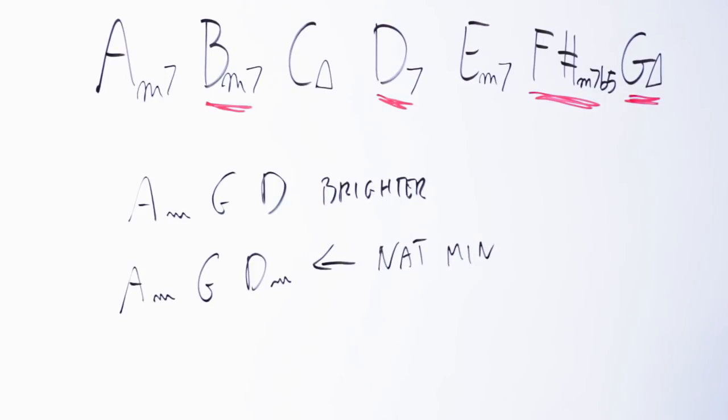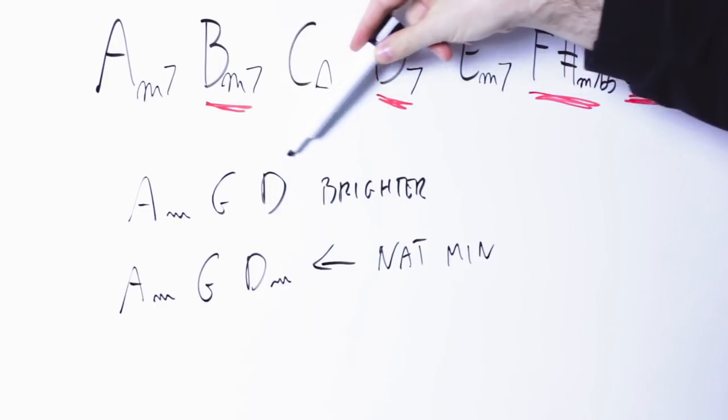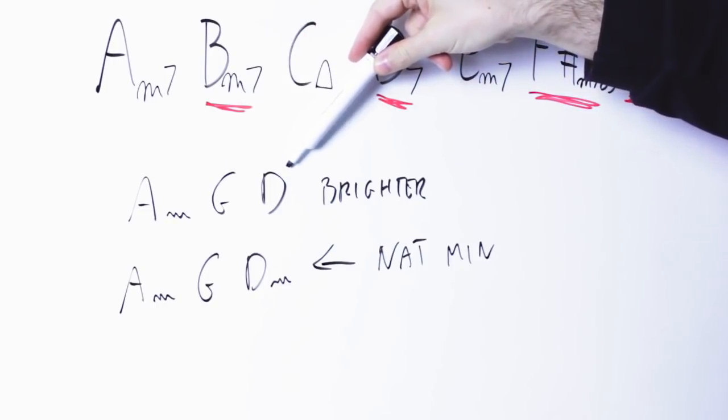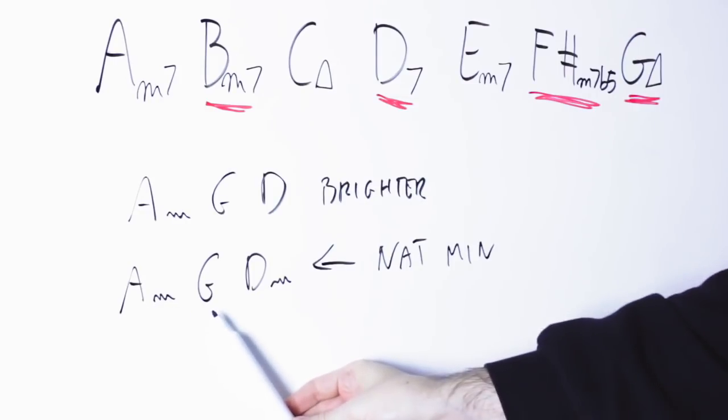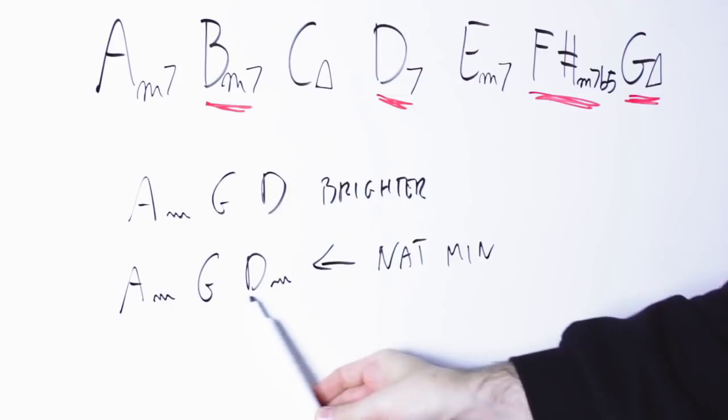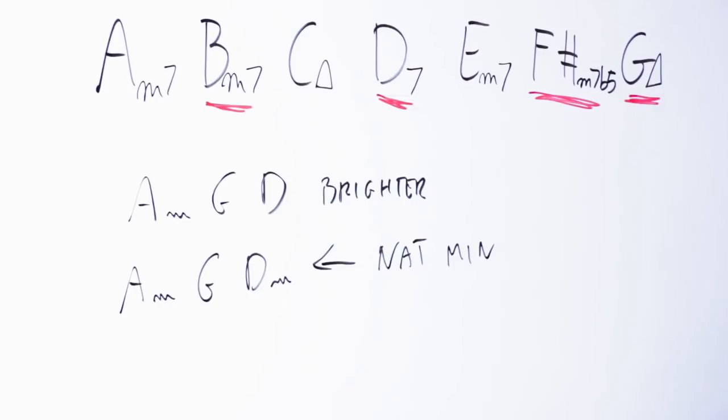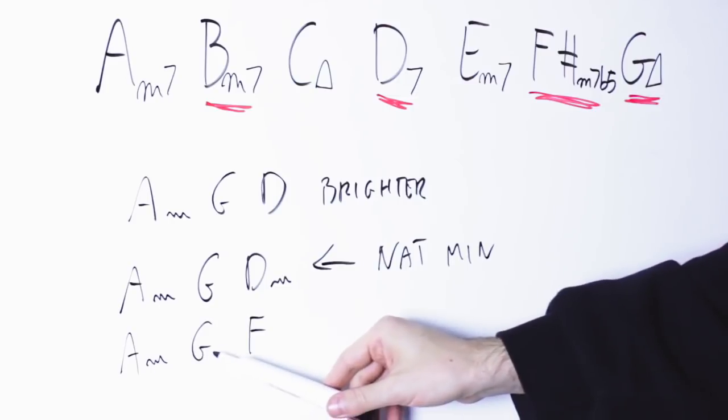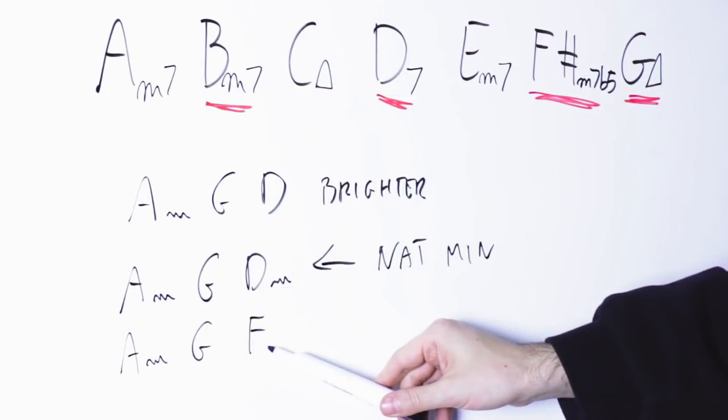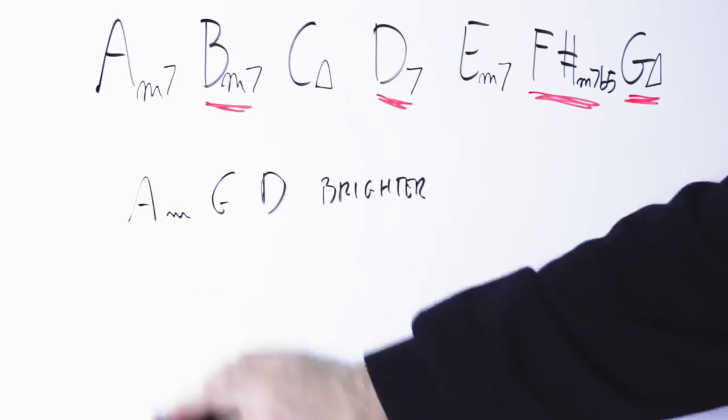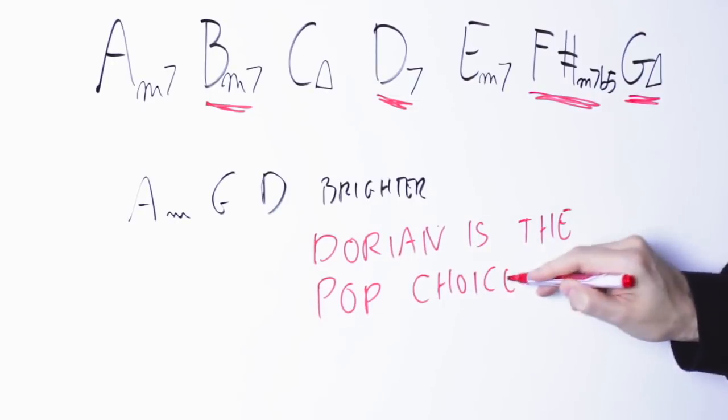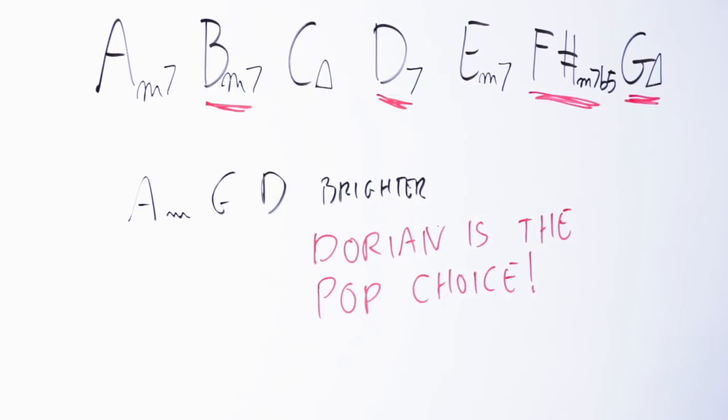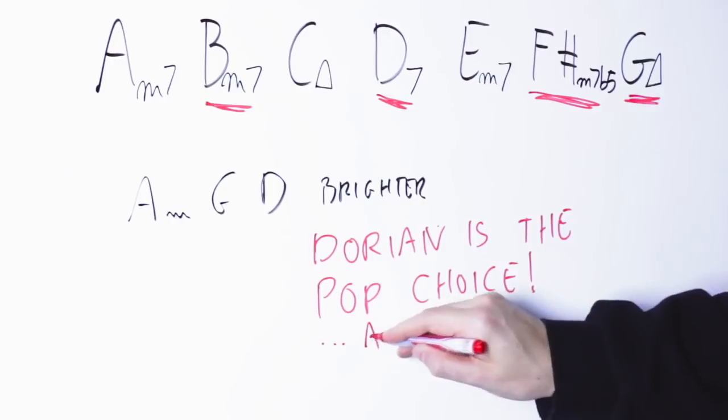Now you can hear how this A minor G D is much brighter than the equivalent in A natural minor, which would be A minor G D minor. So in Dorian... In Aeolian... In Aeolian I can also play A minor G F. So for this reason, if you want to write a pop song in minor but not be as dark as Aeolian, then Dorian is the go-to scale for that.